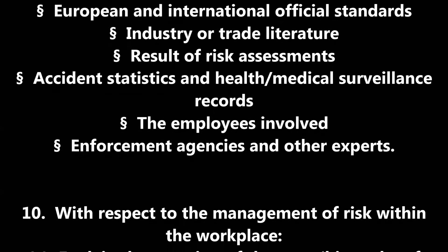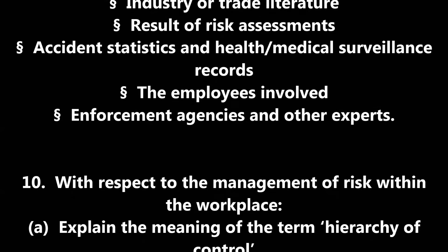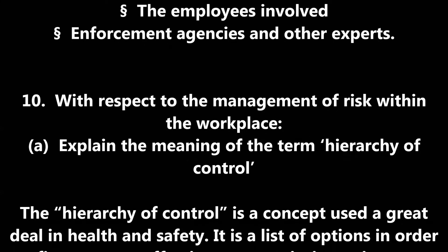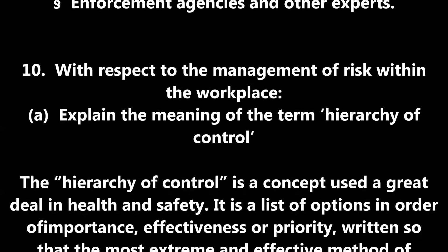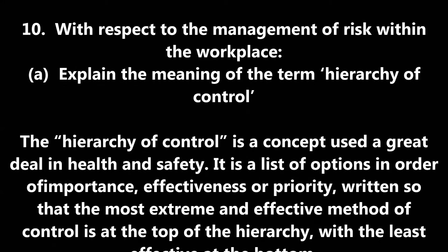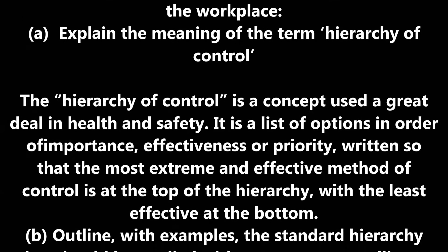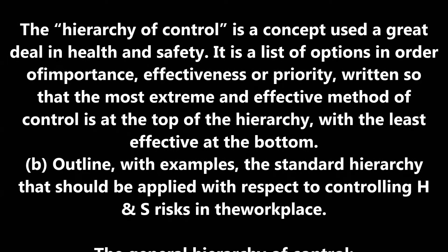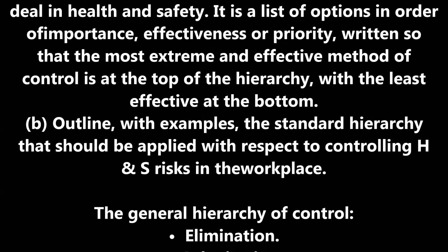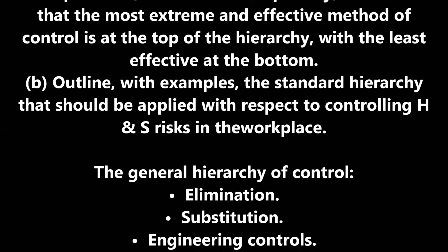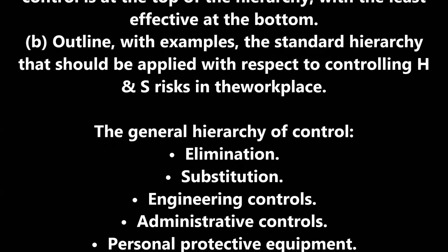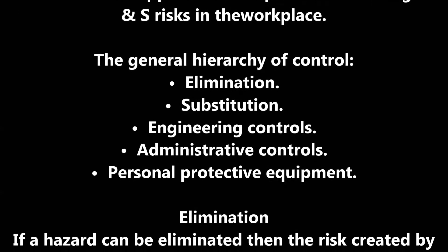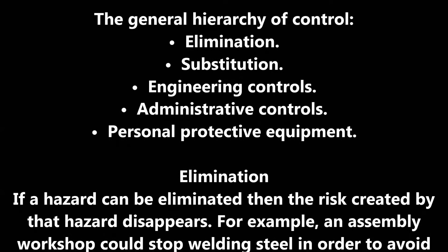Question 9/10: An organisation has had an increase in manual handling accidents and associated ill health, or an increase in absences due to work-related upper limb disorders. Possible sources of information include: statutory instruments; ACOPs and HSE guidelines; manufacturers' information; European and international official standards; industry or trade literature; results of risk assessments; accident statistics and health/medical surveillance records; the employees involved; and enforcement agencies and other experts.